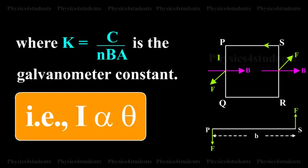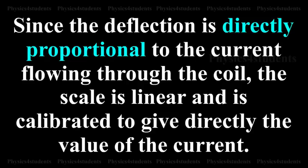Where K equals C divided by NBA is the galvanometer constant. That is, I is directly proportional to theta. Since the deflection is directly proportional to the current flowing through the coil, the scale is linear and is calibrated to give directly the value of the current.